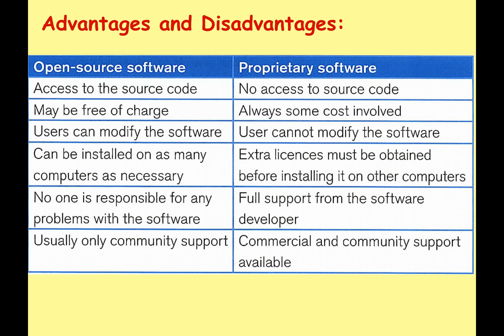With open source software, no one person is responsible for problems. With proprietary software you should get full support from the software developer — in theory. With open source you usually only get community support: volunteers setting up websites, providing documentation in their free time, running forums to help people. Hopefully with proprietary software you get commercial support as well as community support — a company like Microsoft with a website full of professionally provided documentation and help to make sure it works the way you want. These are somewhat idealized comparisons, but they are good points to use in the GCSE exam to compare and contrast the two models and get lots of marks.